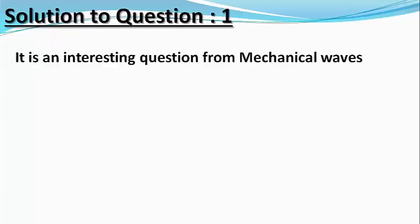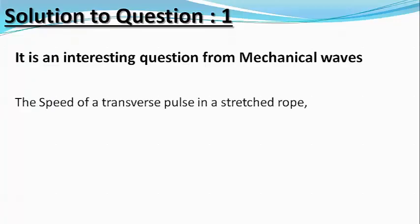Let us now solve this question. We know that the speed of transverse pulse in a stretched rope is given by v equals square root of T divided by mu, where T is the tension in the rope and mu is the mass per unit length of the rope.